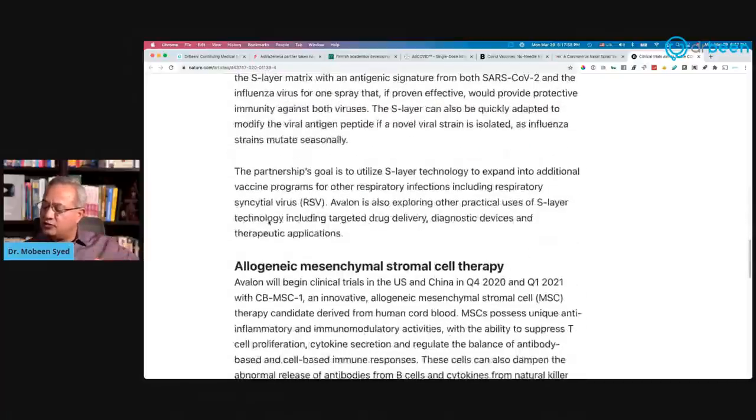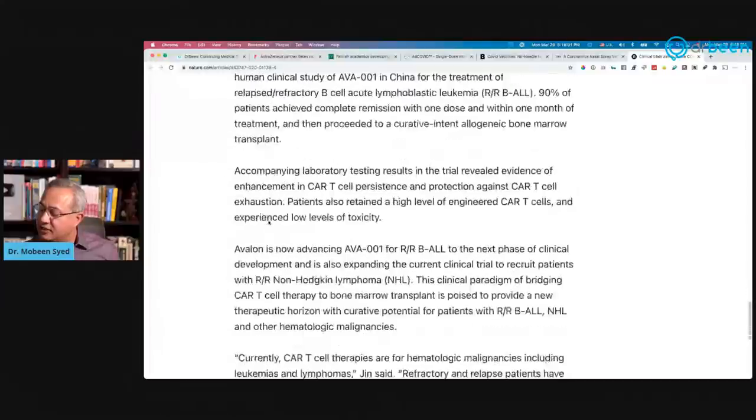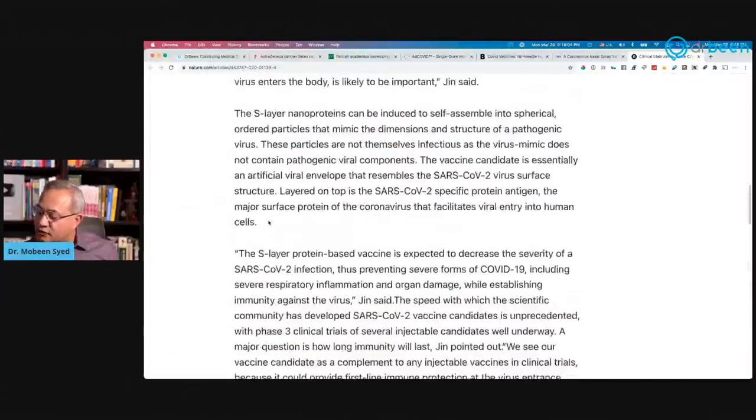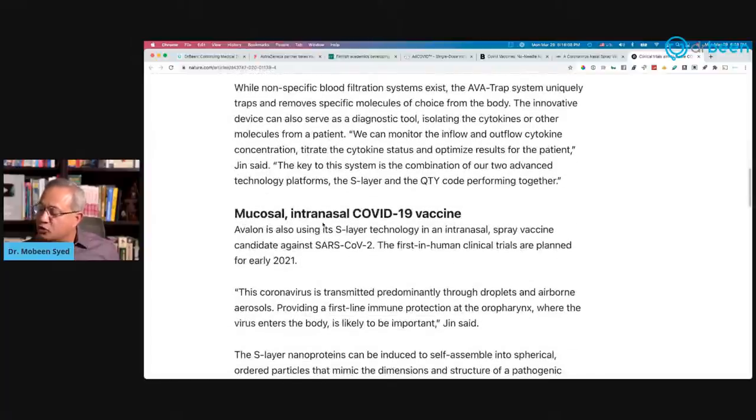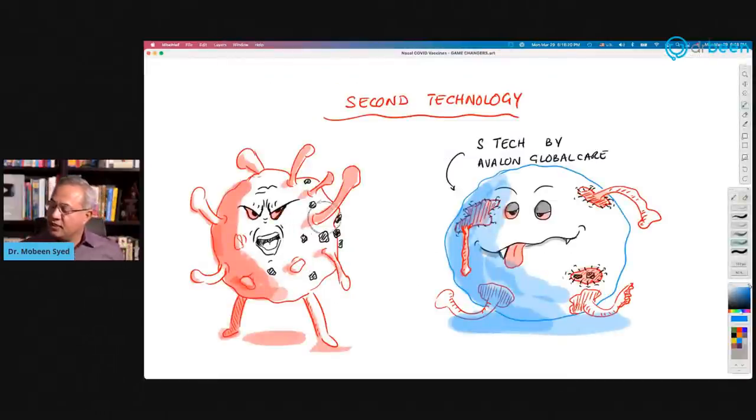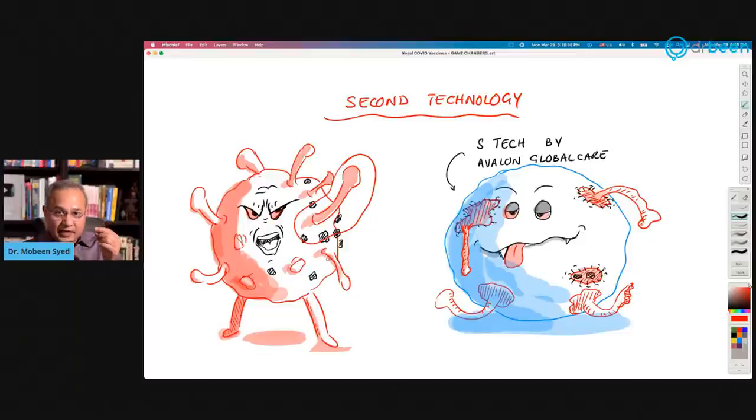So they have a bunch of platforms already. And down here, if you reach this far, this is the S layer protein. So without explaining that too much, if you would then see here, it would say SARS-CoV-2 vaccine using this one. Mucosal intranasal COVID-19 vaccine. Avalon is also using its S layer technology in an intranasal spray vaccine. So let me just very quickly explain what do they mean by that. So here is an actual SARS-CoV-2.